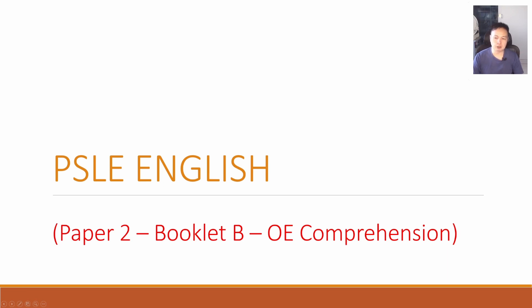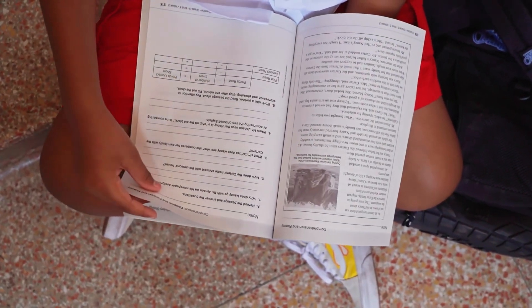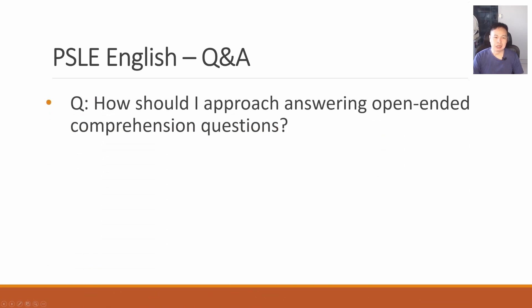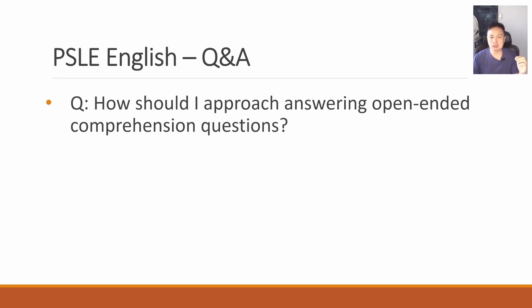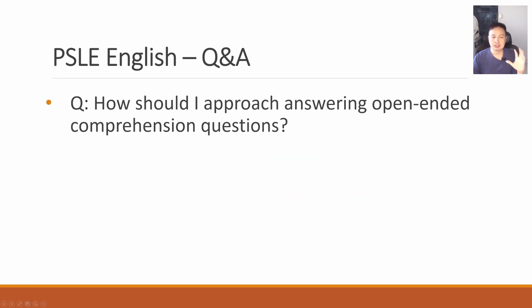Paper 2, Booklet B — open-ended comprehension, worth a total of 20 marks. What types of texts are typically used? They are usually narratives based on stories with characters and dialogues. They are usually interesting and enjoyable to tackle. How should I approach answering open-ended comprehension questions? The recommended approach is to read the text at least once and then read the full set of questions once. After that, go back and read the passage a second time, paying more attention to the main ideas. Then start answering — you are already reading the passage for the third time, looking for the specific details being asked. It usually takes two or three reading attempts before you can find the answer.